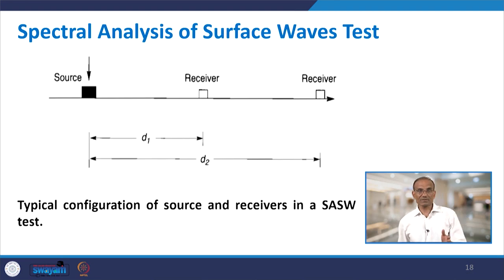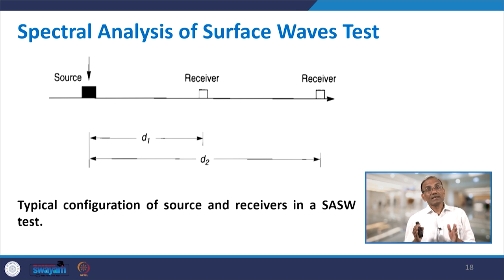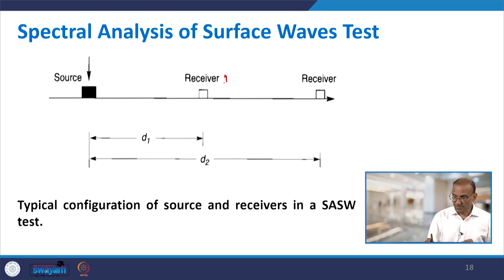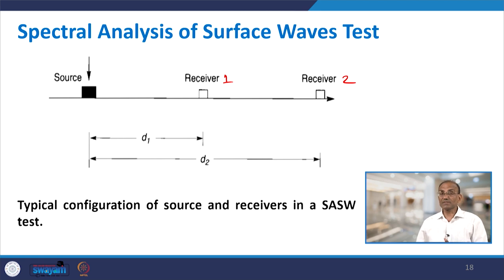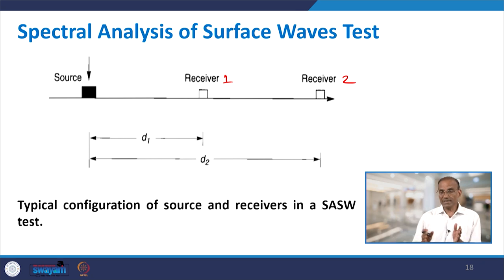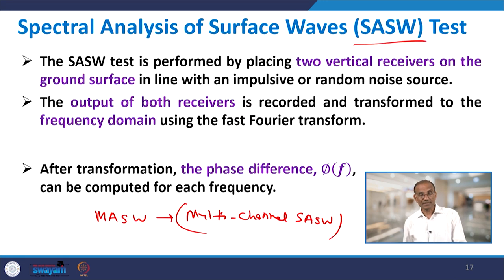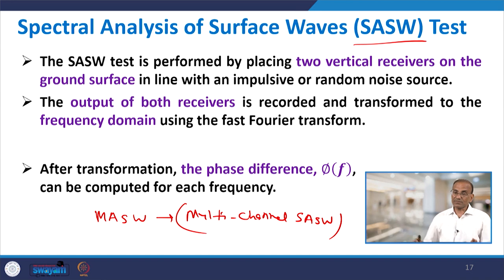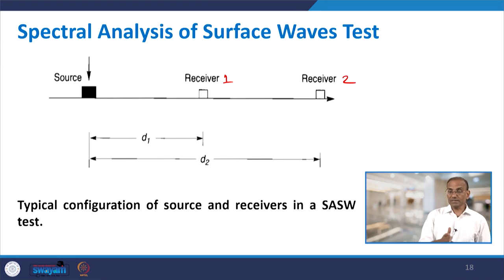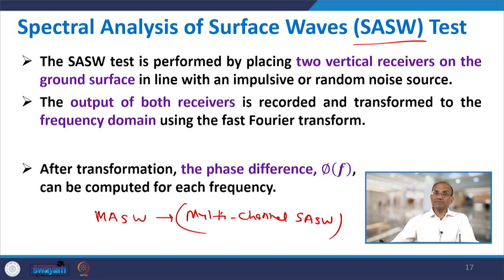In the SASW test you use two vertical receivers on the ground surface, in line with an impulse or random noise source. In the setup you have a source and then receiver 1 and receiver 2. D1 is the distance of receiver 1 from the source and D2 is the distance of receiver 2. Equal spacing is kept as much as possible, so D2 is approximately two times D1. All three — source, receiver 1, and receiver 2 — must lie on a single line.